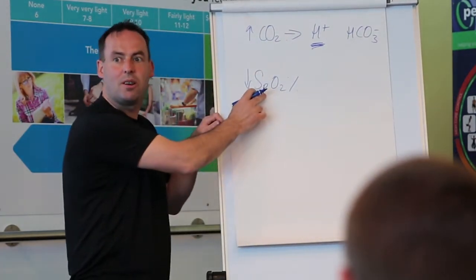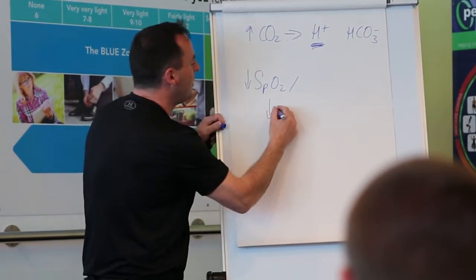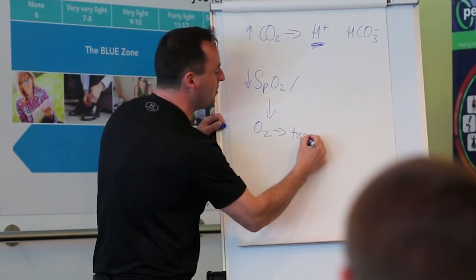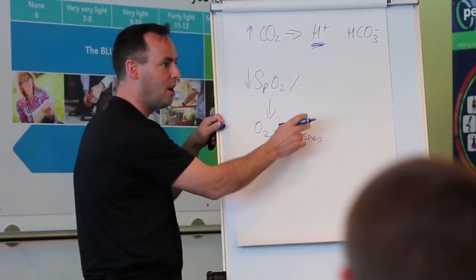When you lower blood oxygen saturation, there's a reduced amount of oxygen delivered to the tissues. Now the tissues are getting hypoxic.